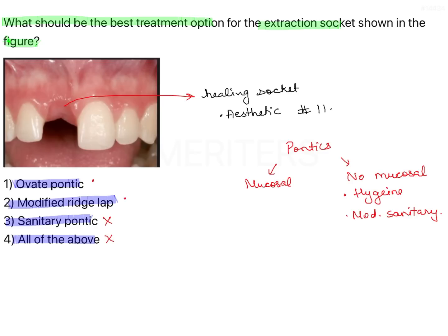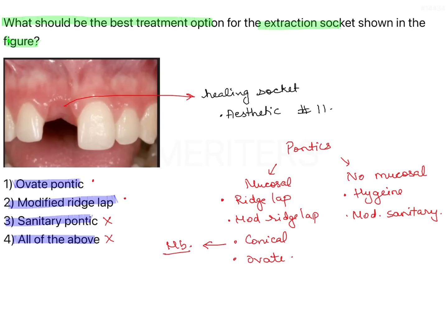That leaves us between Ridge Lab and Modified Ridge Lab Pontic. Looking at the classification of mucosal-contact pontics, we have Ridge Lab, Modified Ridge Lab, Conical, and Ovid. Conical is used in the mandibular posterior area only for a knife-edge ridge, which is not an option here. Ridge Lab is no longer used because it has hygiene problems. That leaves us with Modified Ridge Lab and Ovid Pontic.